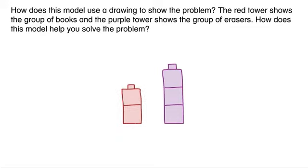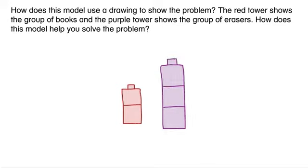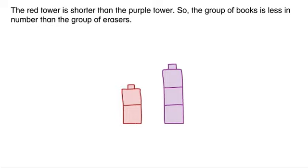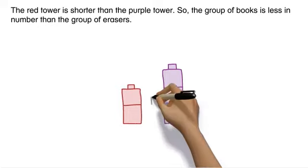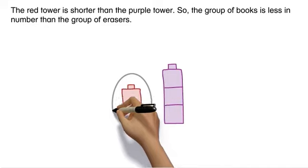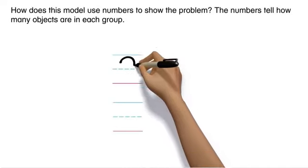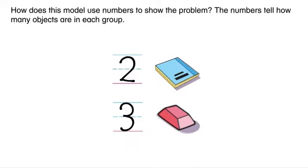The purple tower shows the group of erasers. How does this model help you solve the problem? The red tower is shorter than the purple tower, so the group of books is less in number than the group of erasers. How does this model use numbers to show the problem? The numbers tell how many objects are in each group.